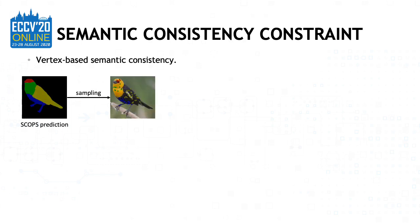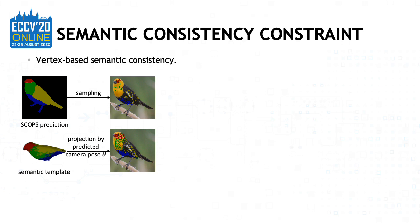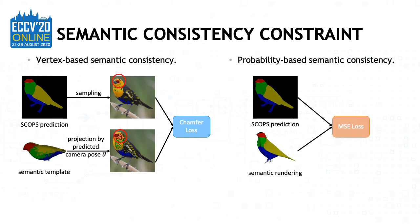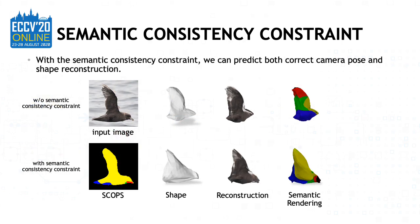In practice, we instantiate the semantic consistency constraint into two objectives. In the first one, we sample a set of points from each semantic part of the SCOPS prediction, and project each vertex on the template onto 2D images using the predicted camera pose. We then constrain the projected points to be close to the sampled points with the same semantic label. We use vertices on the template instead of individual meshes to encourage the network to learn correct camera pose rather than changing the shape to satisfy the constraint. In the second objective, we simply constrain the rendered semantic map to be close to the SCOPS prediction. With the semantic consistency constraint, the model is able to predict both correct camera pose and shape.